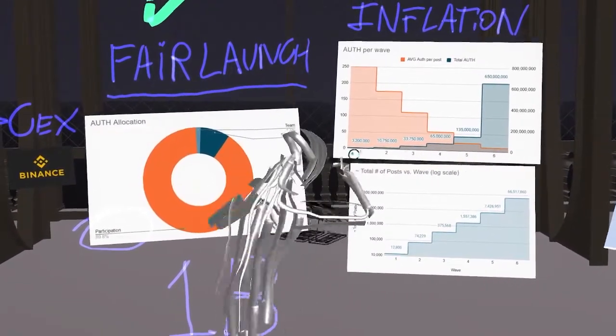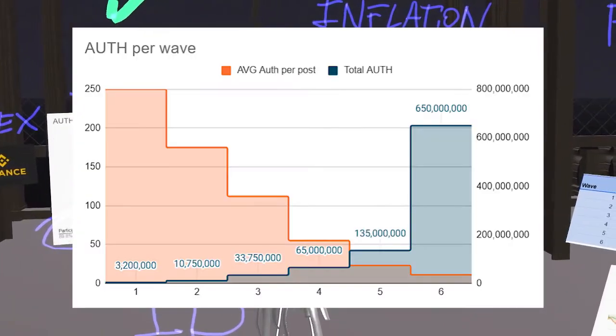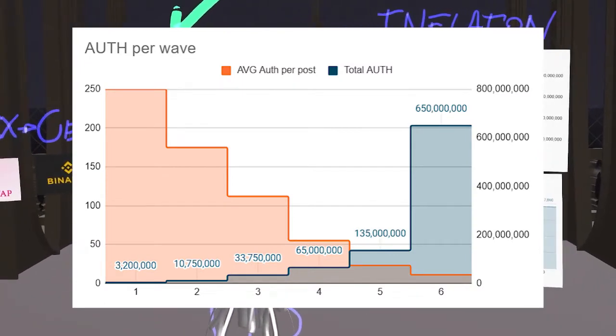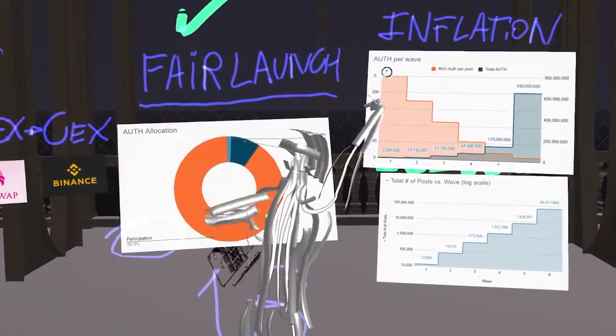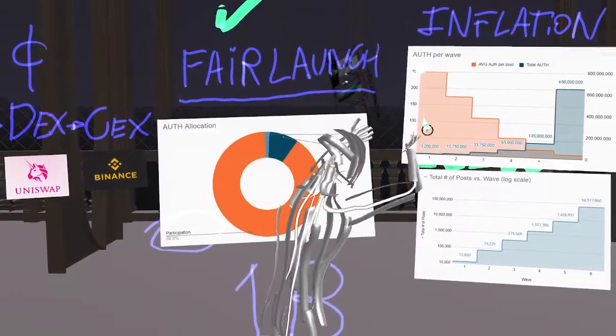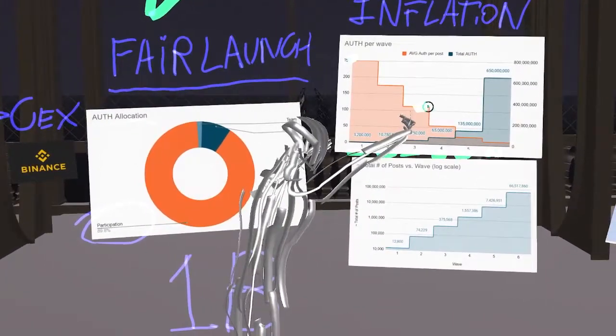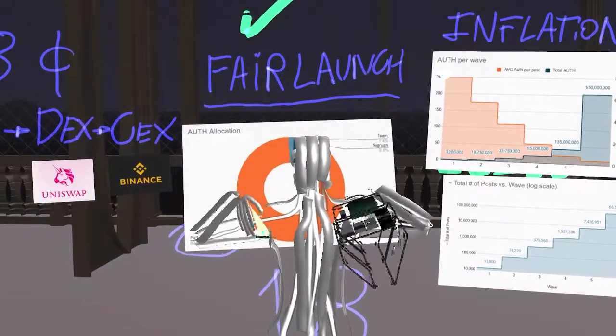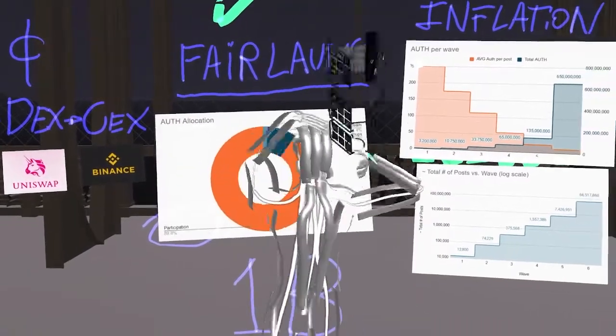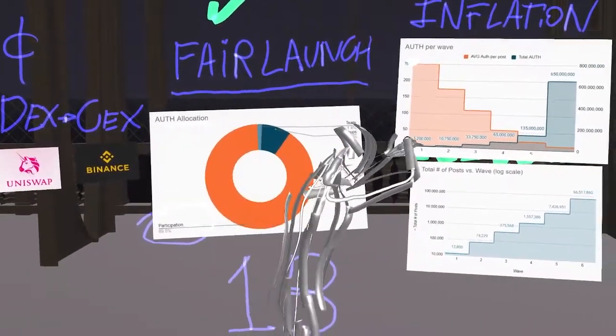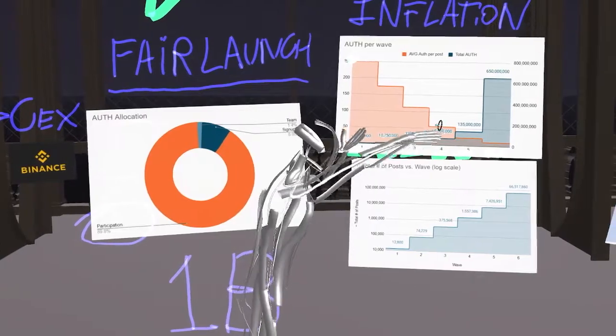The system that they put together is per wave. They define 6 waves, and for each of the waves you have different amounts of auth minted each time that you post. For the first wave you have an average of 250 auth per post. For wave number 2, this number drops to around 180. For wave number 3, it drops to 100, etc. The waves are defined by how many total auth have already been minted. Bitcoin uses the exact same system. So the first 3 million auth are part of wave 1, 10 million part of wave 2, and so on and so forth.